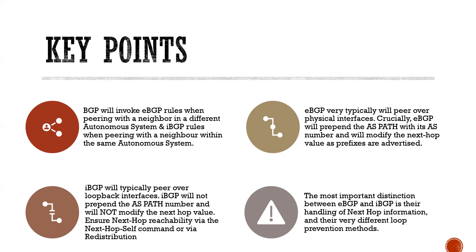Final recap: BGP will invoke eBGP rules when you specify a different autonomous system number, but invoke iBGP rules when you specify the same autonomous system number in your neighbour relationship. eBGP will prepend the AS path, stamp it with its AS number, and crucially modify the next hop. iBGP will not prepend the AS path as it passes routes throughout the iBGP domain, and even more crucially, it will not modify that next hop. Make sure to ensure next hop reachability via the next-hop-self command or via redistribution. The most important thing to understand between eBGP and iBGP is the handling of next hop information and how they prevent loops. Thanks very much and we'll see you guys soon.